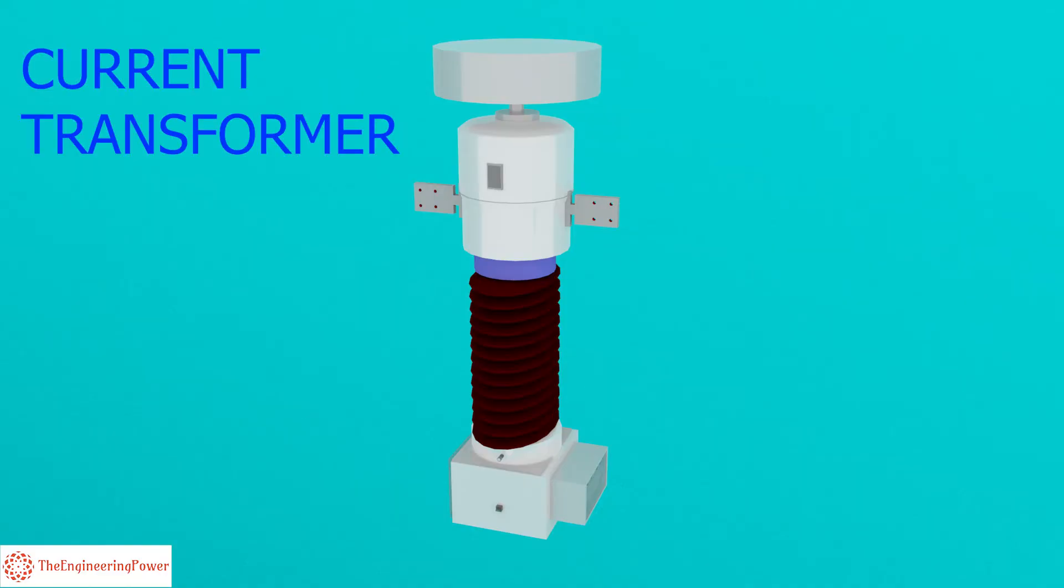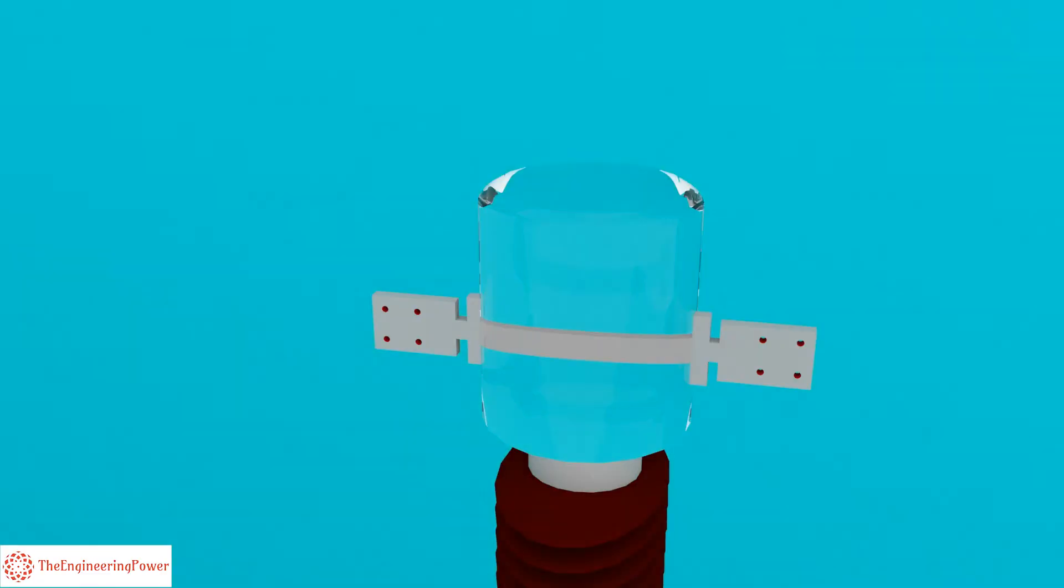That's how a high voltage CT looks like. That's the primary terminal of the CT, which is connected to the main circuit and carries the full load.